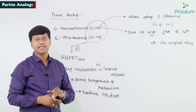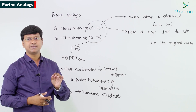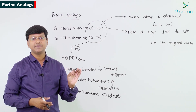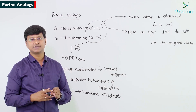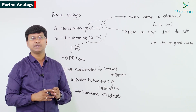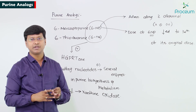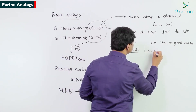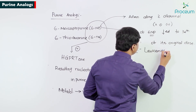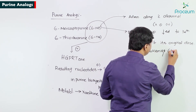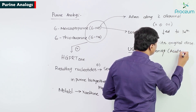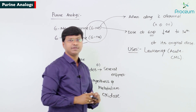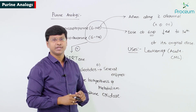The purine anti-metabolites are used mainly for the treatment of leukemias, including both acute leukemia and chronic myeloid leukemia.